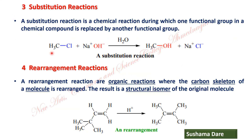Now the substitution reaction. In this reaction, you can easily see that the Cl group is replaced by hydroxide. One group is replaced by the other group — that type of reactions are called substitution reactions.